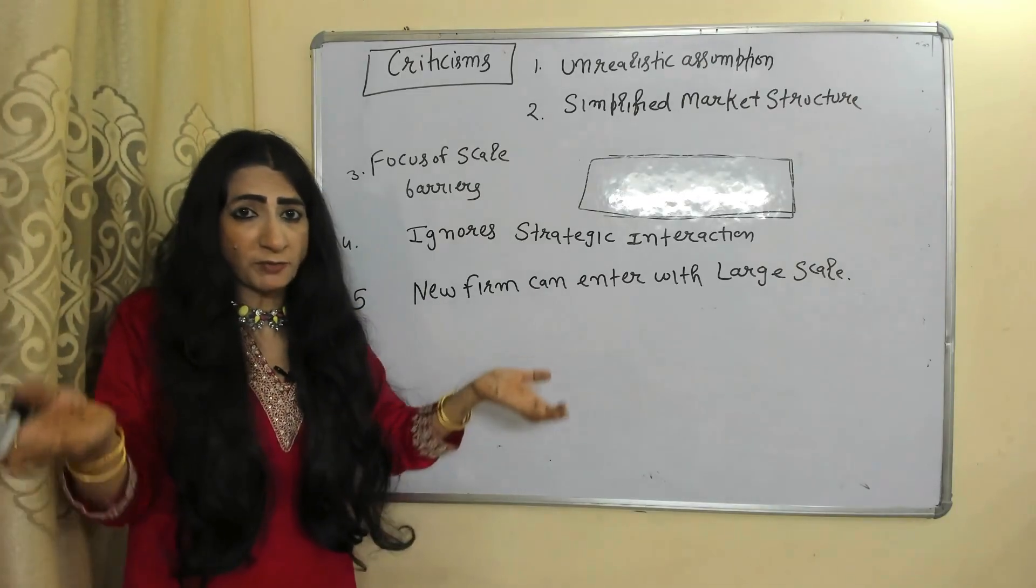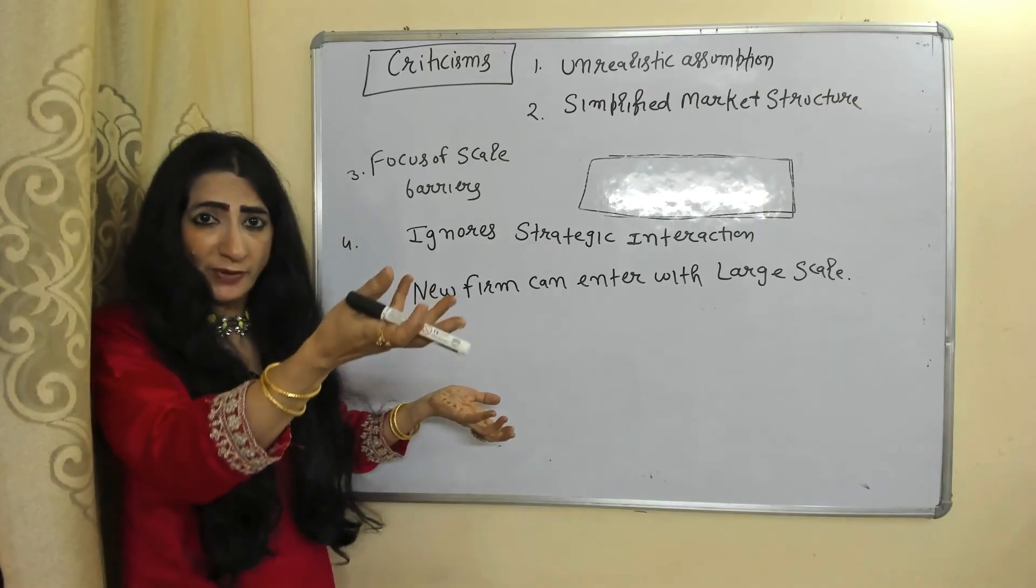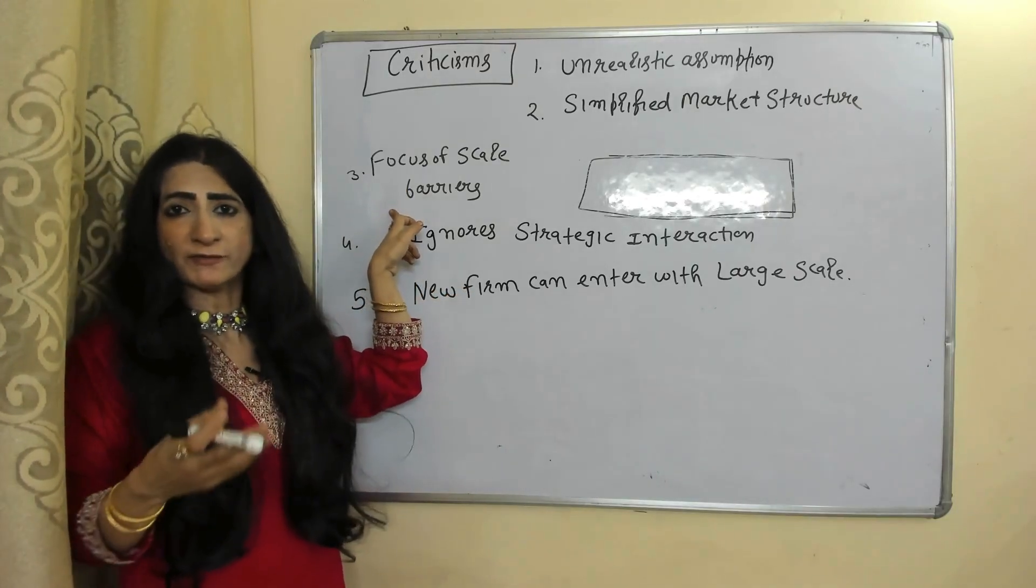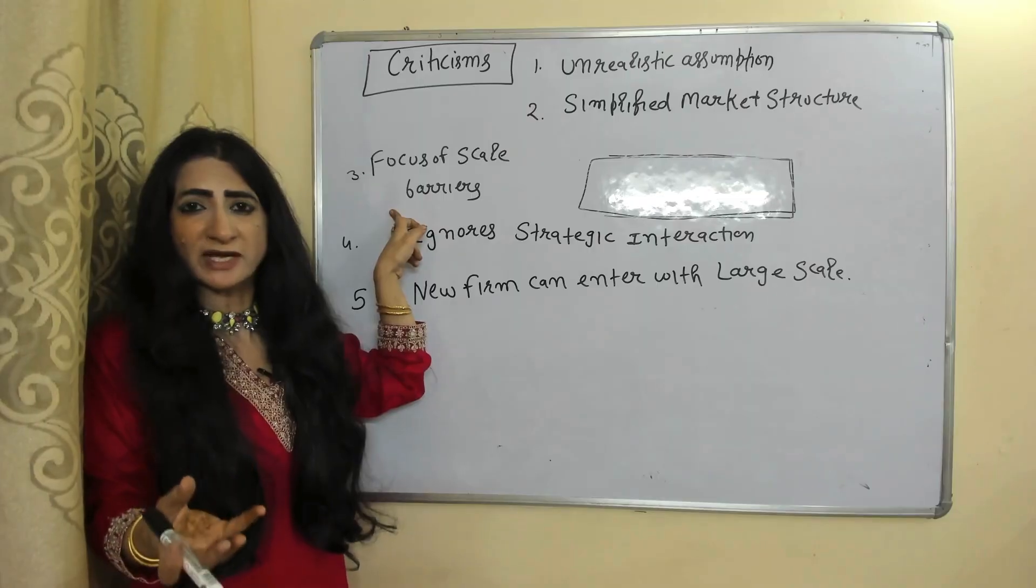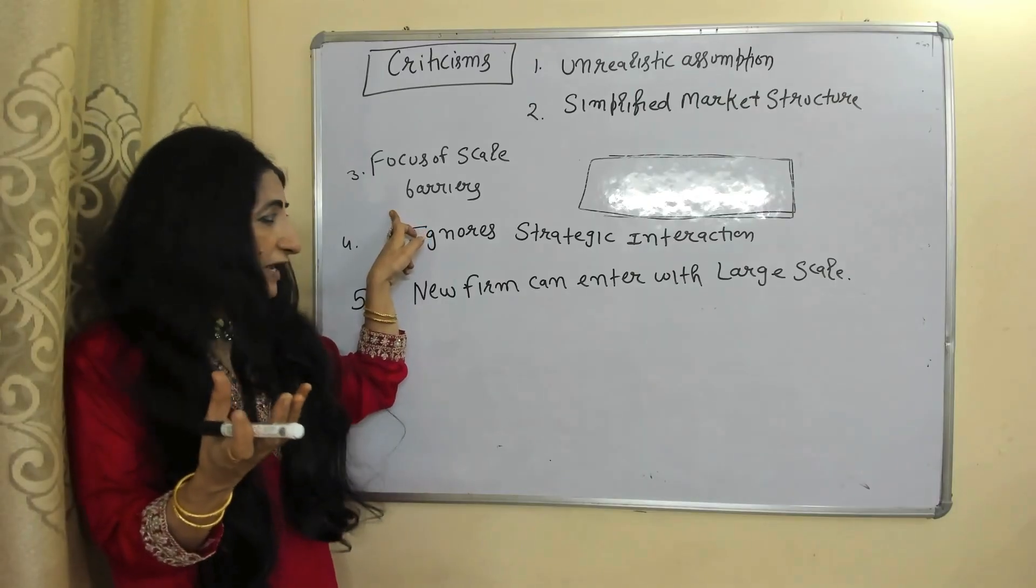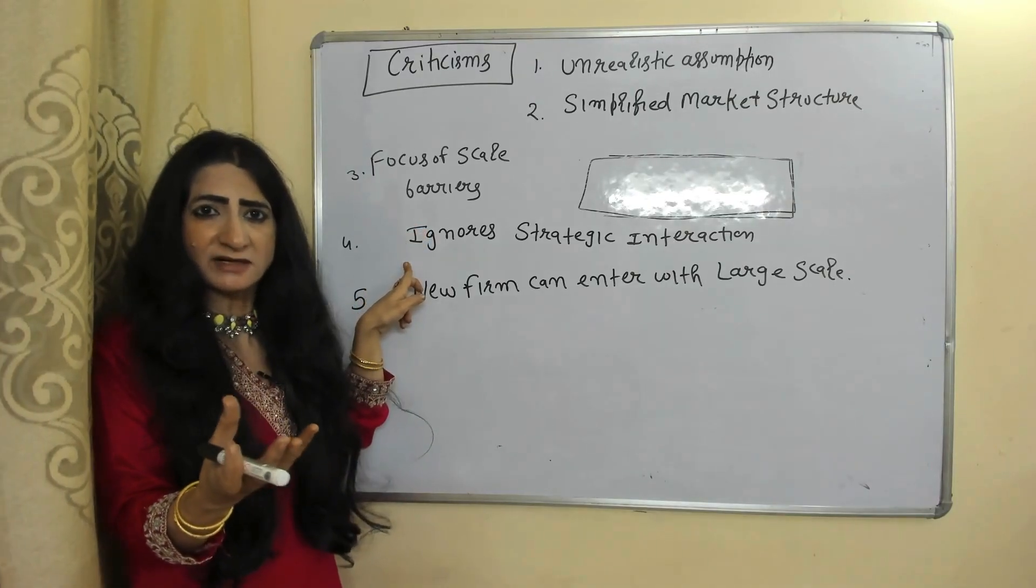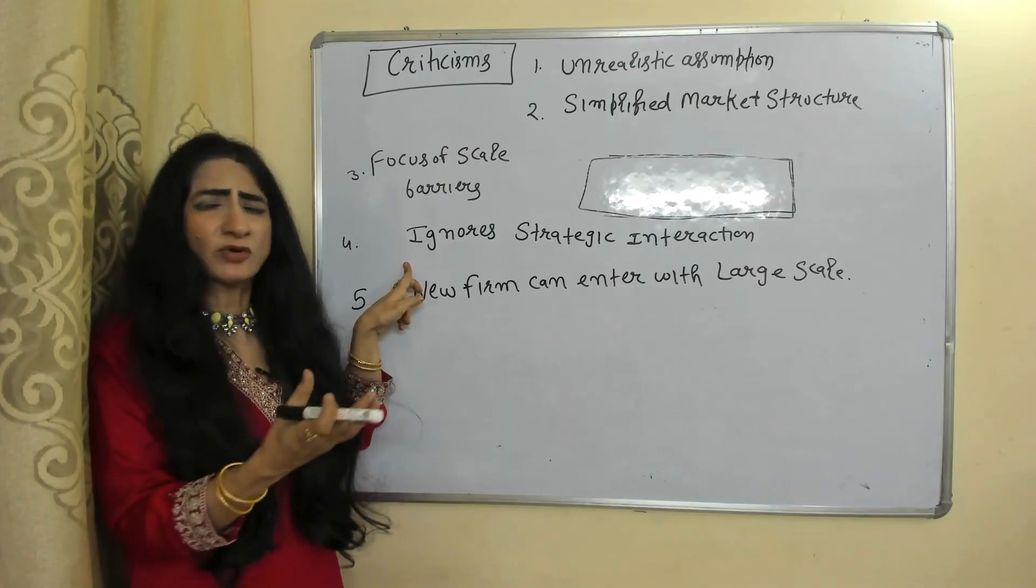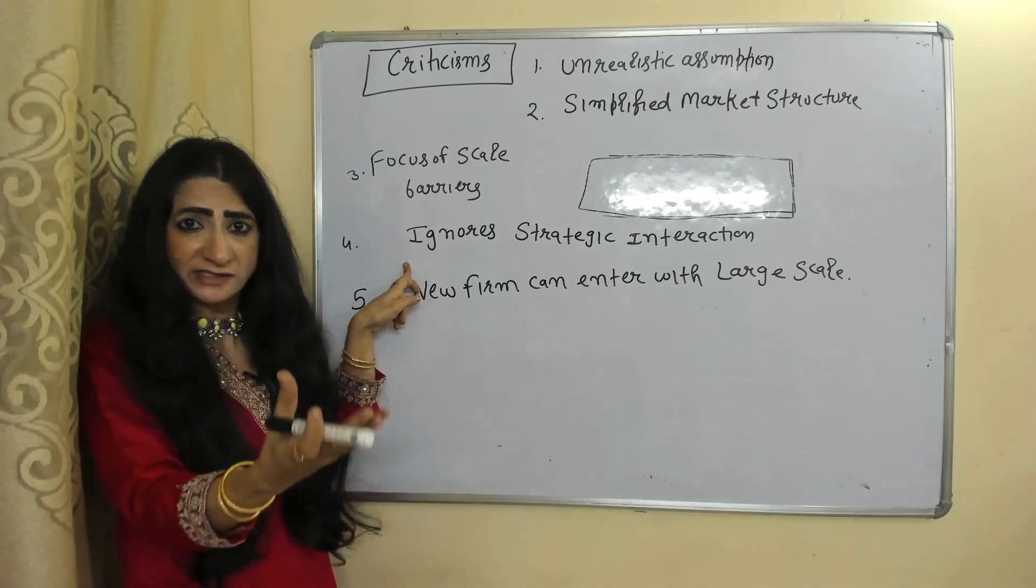But in reality, firms can adopt some other methods for deciding price. This model assumes economies of scale work as a barrier, but doesn't focus on specific types of barriers. Ignore strategic interaction: this model doesn't cover the full range of strategic interactions.